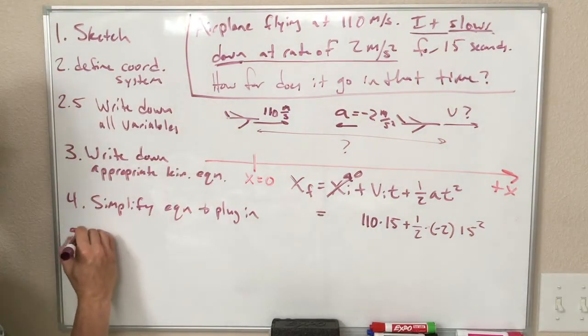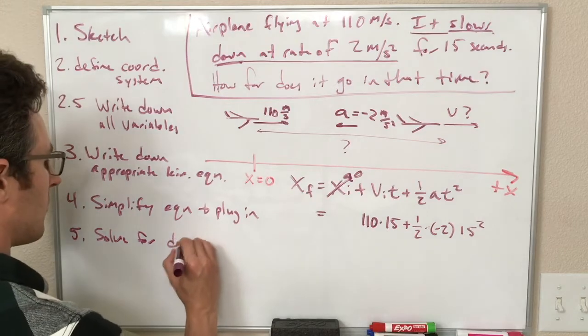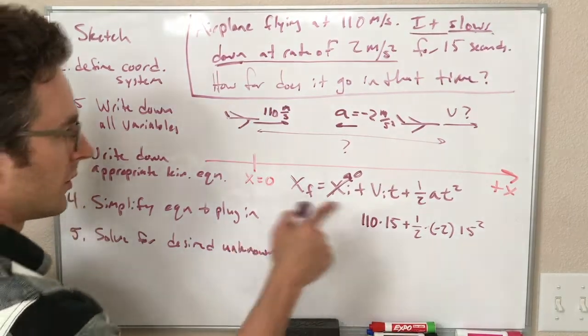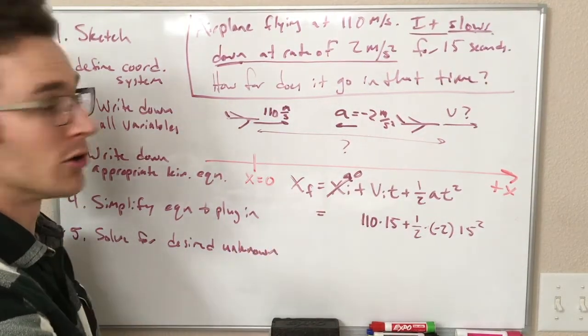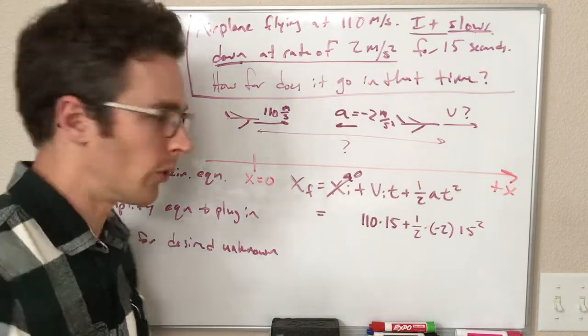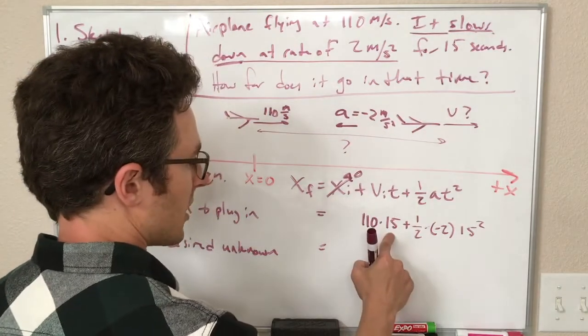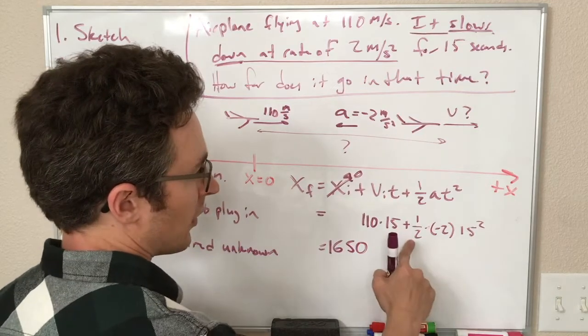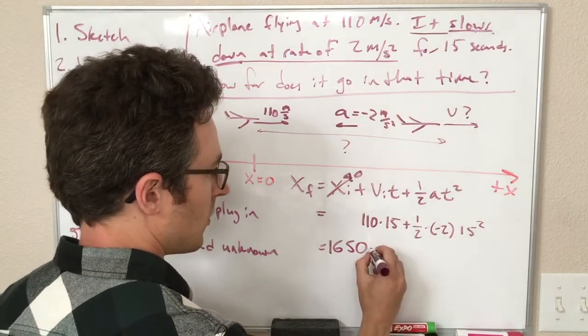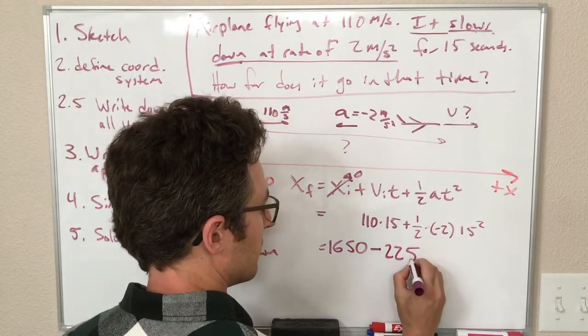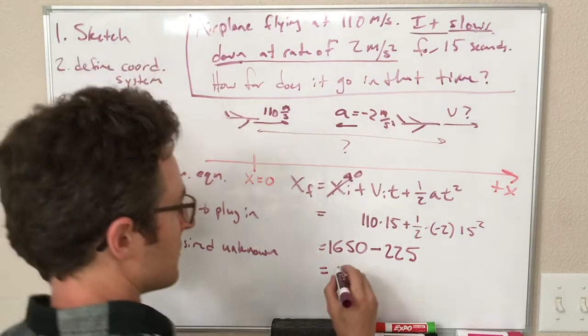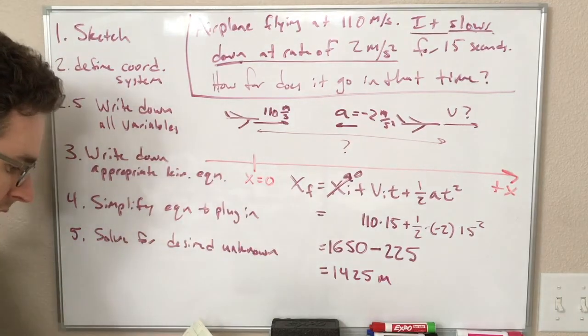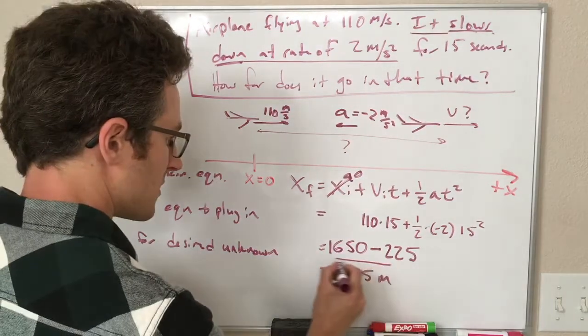So step five is to solve for the desired unknown variable, which in this case we already have done because the equation is in our notes in terms of X final. And X final is what we're looking for. So all I have to do is type this into the calculator. So 110 times 15 is 1650. And here we have 1 half times minus 2, so that's just minus 1. And 15 squared is 225. And that gives us 1425 meters when we type that all into our calculator. So that is the answer.